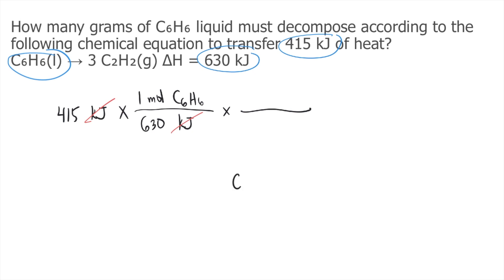The molar mass of carbon is 12.01 grams per mole. We multiply that by 6, and that's equal to 72.06 grams per mole. For hydrogen, the molar mass is 1.008 grams per mole times 6 hydrogens, so 1.008 times 6 equals 6.048 grams per mole. If we get the total, that's 78.108 grams per mole. This is the molar mass of C6H6.